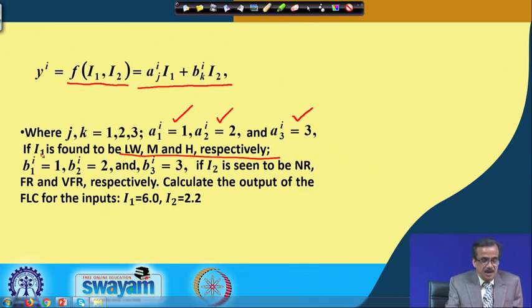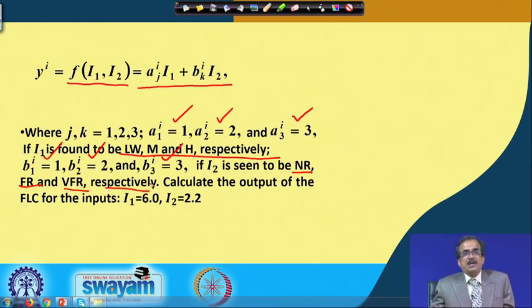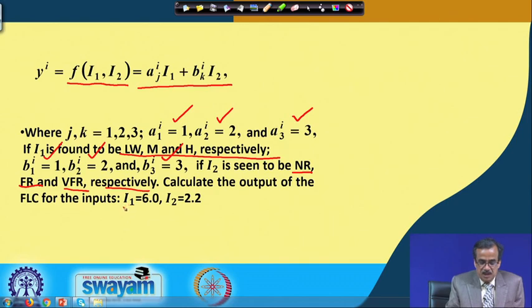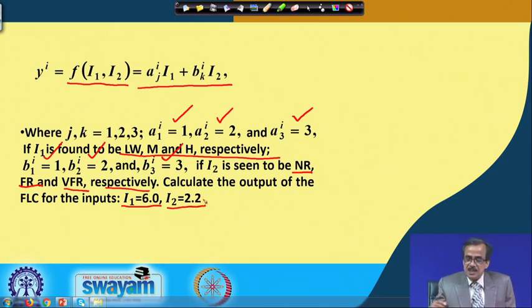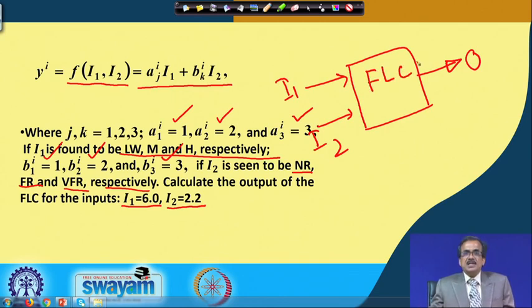We need to calculate the output of the FLC for inputs i1=6.0 and i2=2.2. This is a simple system with two inputs and one output — a Takagi and Sugeno's based fuzzy logic controller — and we need to determine the output for this set of inputs.